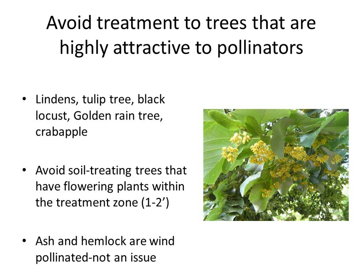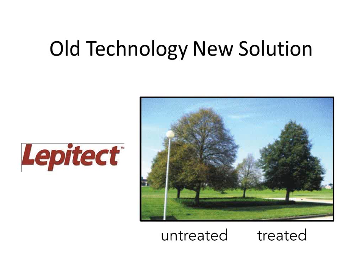To avoid pollinator issues, you can avoid soil treating trees that have flowering plants within one to two feet away from the base. Remember that wind-pollinated tree species like ash and hemlock are not an issue. This also brings into play another use for Lepitec or Transtec — because they move into the tree much more rapidly, you can treat right after petal drop or after flowering with things like Japanese beetle on flowering linden. You can time the application to occur after flowering, and because it moves quickly into the tree you have a soil applied option versus being limited to imidacloprid or dinotefuran applied before flowering.